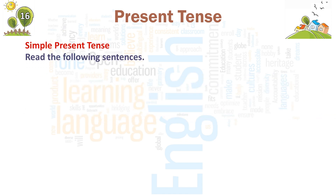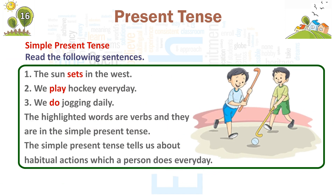Simple Present Tense. Read the following sentences. 1. The sun sets in the west. 2. We play hockey every day. 3. We do jogging daily. The highlighted words are verbs and they are in the simple present tense. The simple present tense tells us about habitual actions which a person does every day.